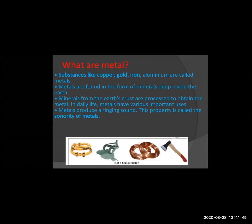Now we study what are metals. Metals are found in the form of minerals deep inside the crust of the earth. In the inside of the earth's crust we find metals like copper, gold, iron and aluminium. Minerals from the earth's crust are processed to obtain metals. We cannot use them in the same raw form — they have to undergo processing, after which we obtain the metal.